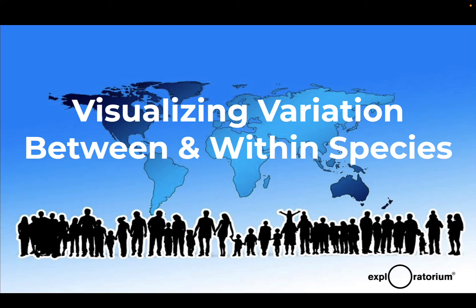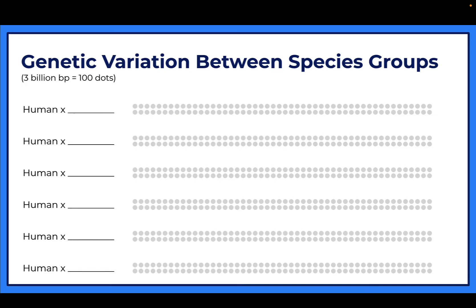Today we're going to look at variation that takes place between two separate species, for example humans and chimpanzees, and then what the variation looks like from one human to another. You're going to have a handout - if you don't have it from class you can print it out from Canvas. We're going to look first at the genetic variation between humans and chimpanzees.